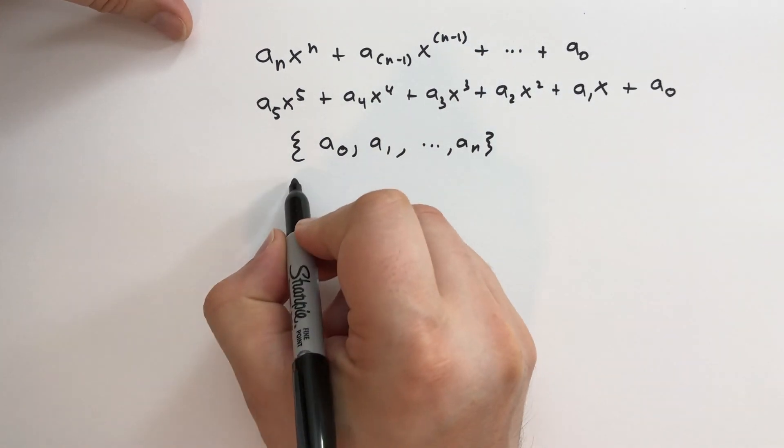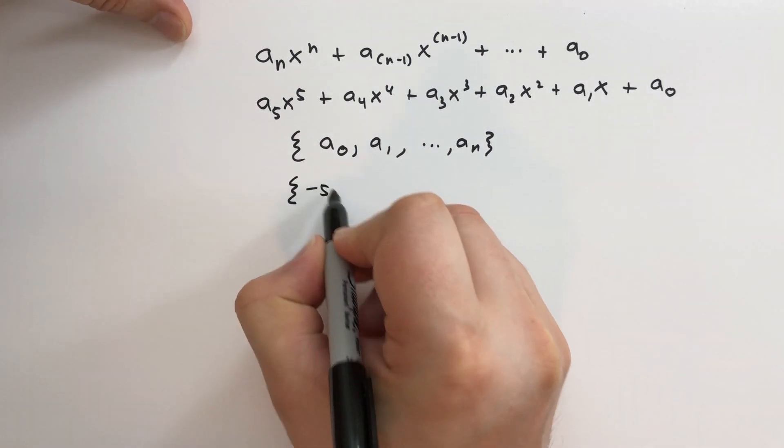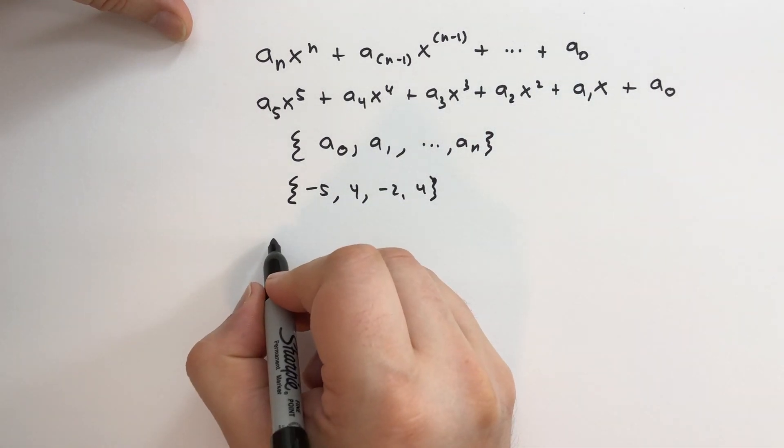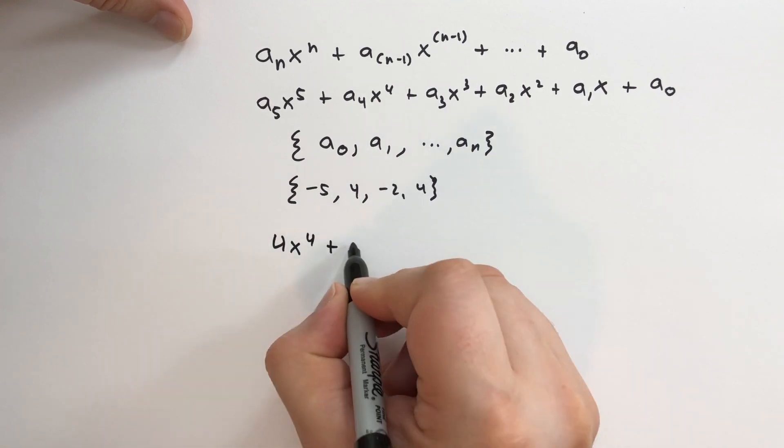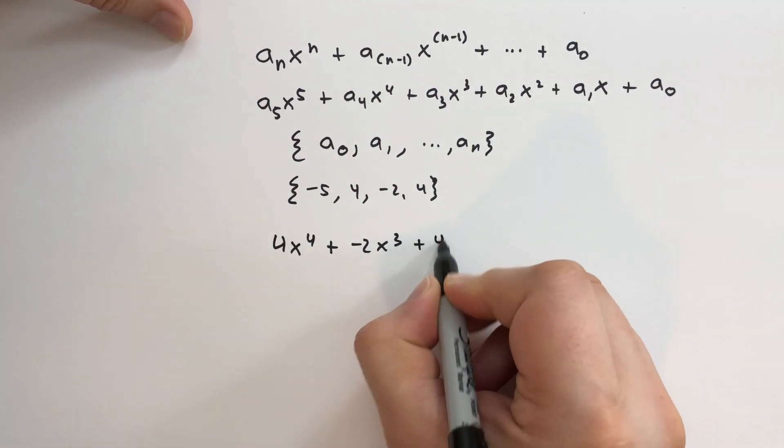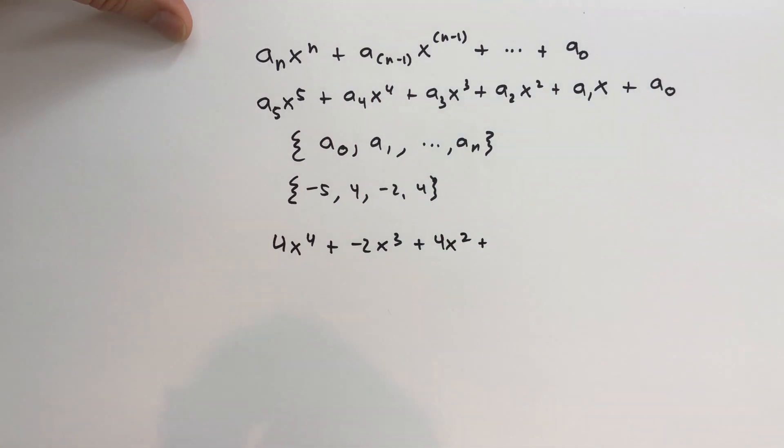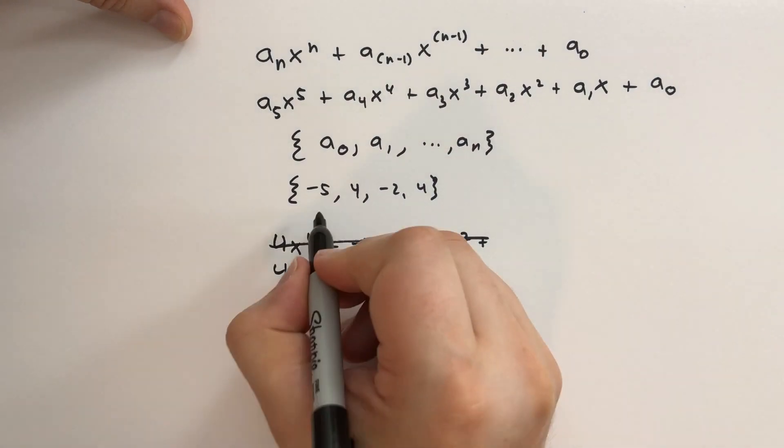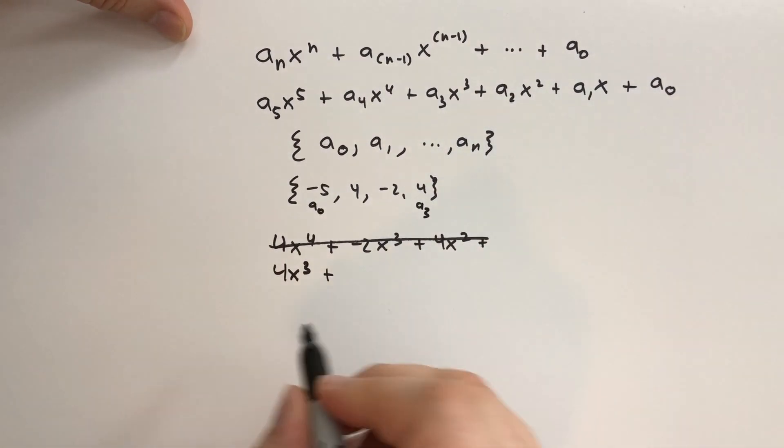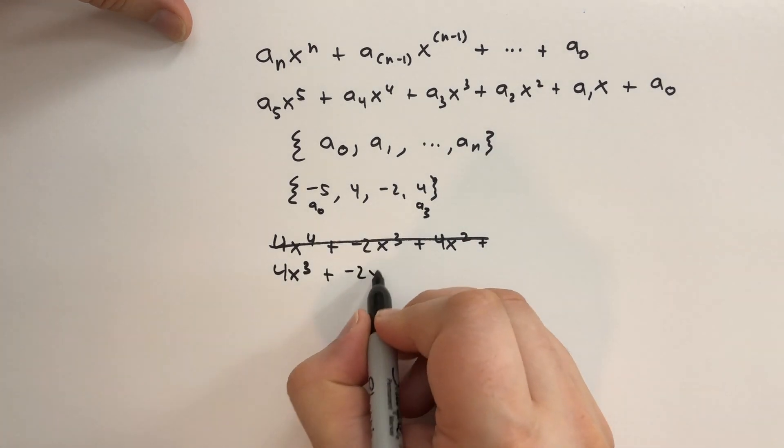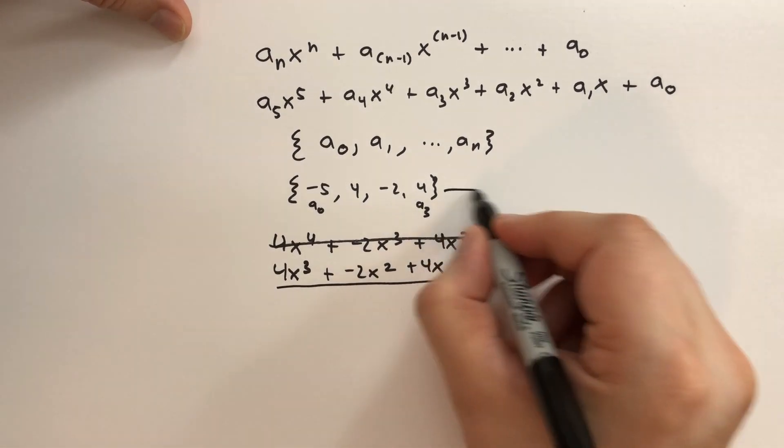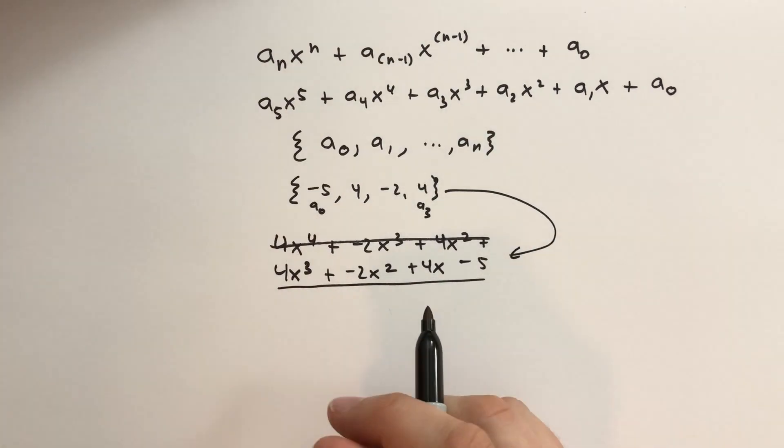So if we had, for instance, a sequence minus 5 in the book, 4 minus 2 and 4, that would represent 4x to the third power, because this would be a sub zero, and this would be a sub three. So it's x to the third power. And then we have minus 2x squared plus 4x minus 5. That is what this sequence of numbers represents, if this is the representation of what that sequence means.